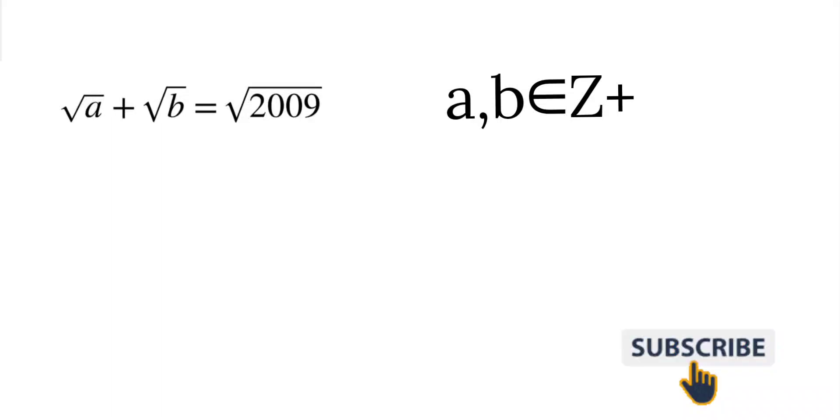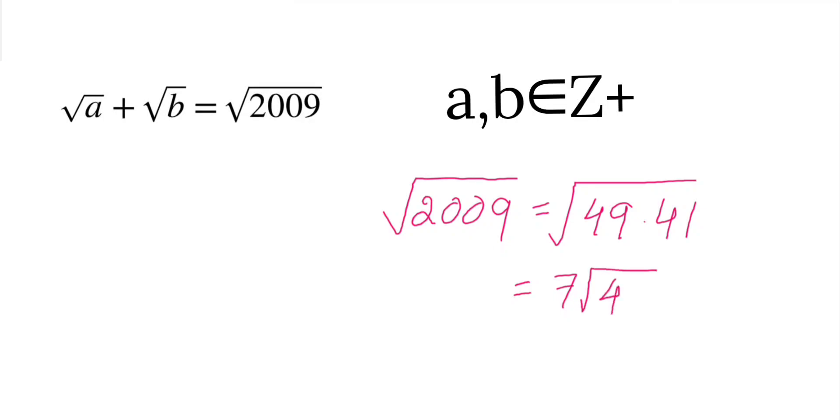So how to start this question? If we factorize 2009, we see that 2009 is nothing but 49 times 41. And we know that 49 is a perfect square, so we can take it out, and inside the square root 41 will remain.